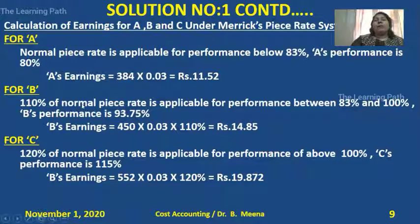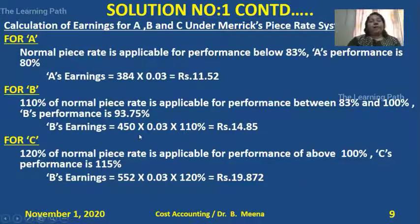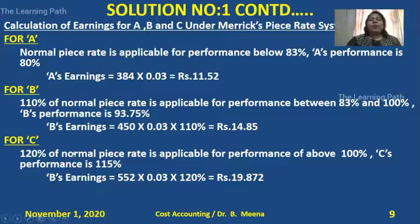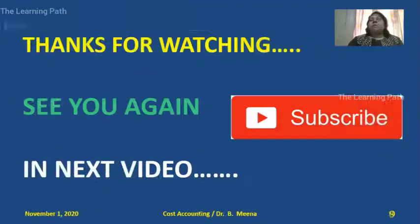For Worker B, the second rule applies because B's performance is 93.75%, so B is eligible for 110% of normal piece rate. B's earnings = 450 × 0.03 × 110% = 14.85. For Worker C, performance is 115%, which is above 100%, so C is eligible for 120% of normal piece rate. C's earnings = 552 × 0.03 × 120% = 19.872. This is all about how to calculate earnings under Merrick's Piece Rate System.